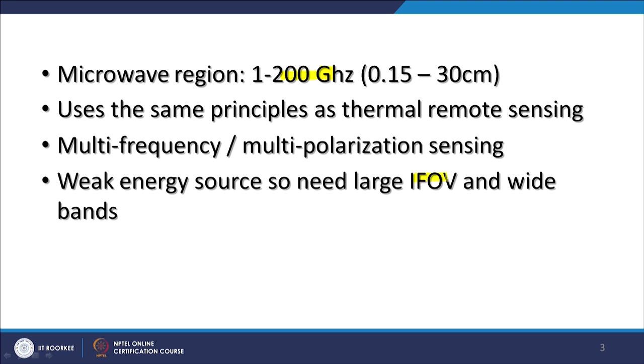We need a large IFOV — Instantaneous Field of View — and bands are also generally very wide. The energy emitted in the microwave region by natural objects is very very small, and therefore in order to register a signal by a sensor in space you require a large IFOV, which is directly related to spatial resolution. The bands here are not narrow like in the visible part of the EM spectrum; instead they are very large.